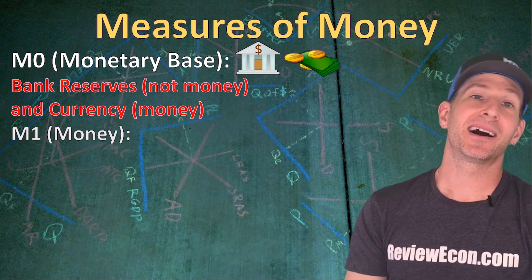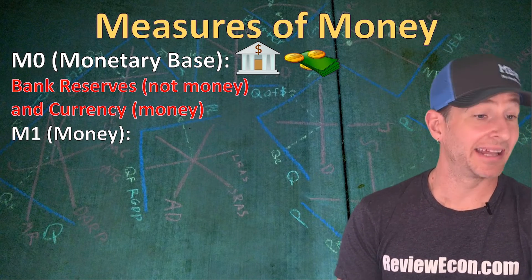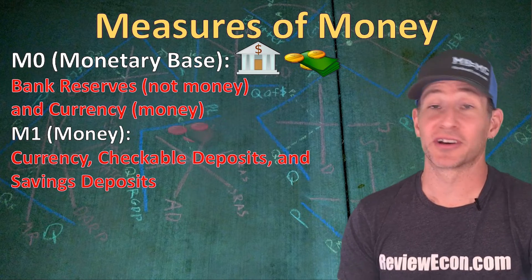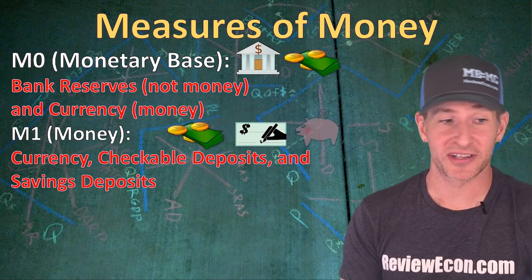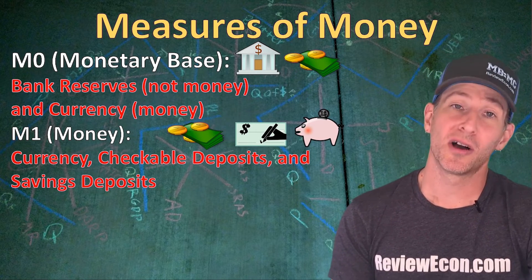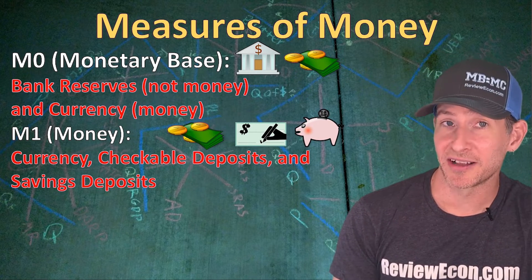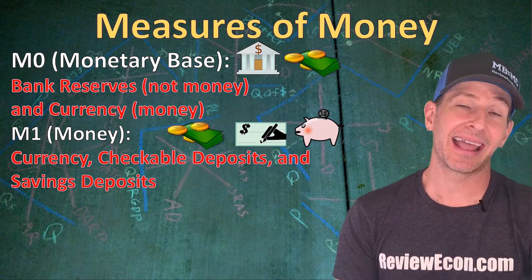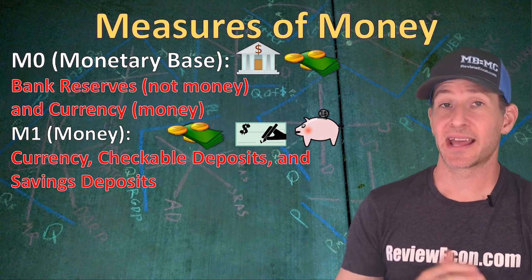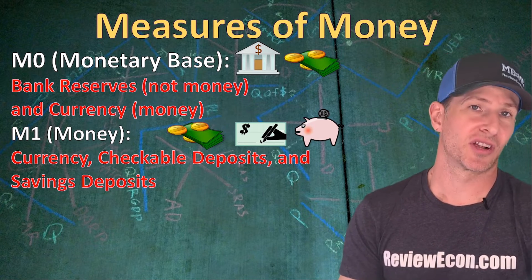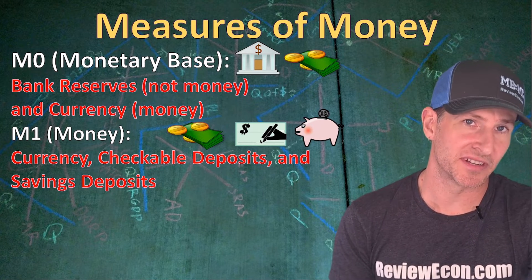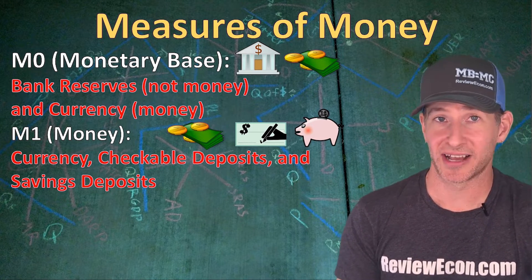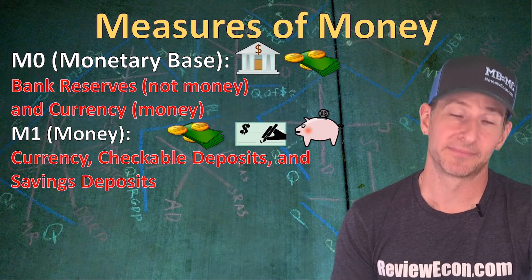The M-1 money supply is money. It includes the currency we just talked about, along with checkable deposits — or checking account money — and savings deposits as well. It's the M-1 money that serves as a medium of exchange throughout the United States economy.